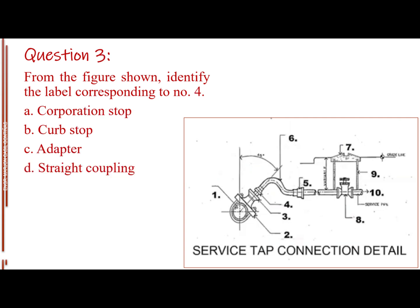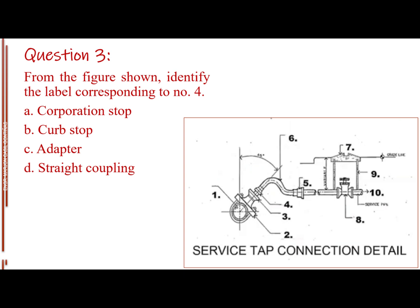Question number 3. From the figure shown, identify the label corresponding to number 4. Letter A, corporation stop. Letter B, curb stop. Letter C, adapter. Letter D, straight coupling. The answer is letter D, straight coupling.